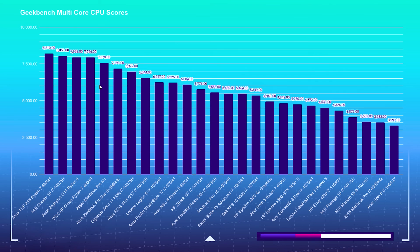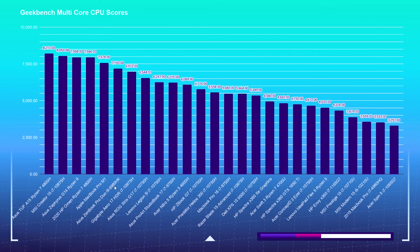In Geekbench multi-core CPU performance, topping the charts again is the Ryzen 7 4800H, followed by the i7-10875H. The i9-10980HK was equivalent to the 10900K in my testing.